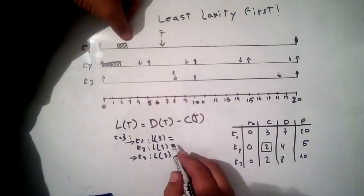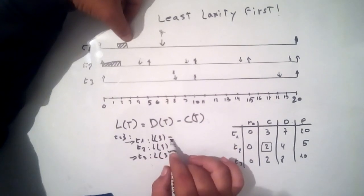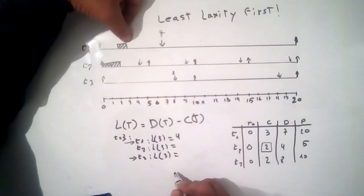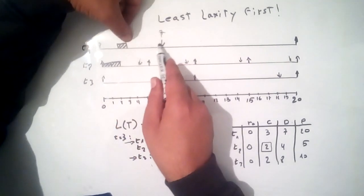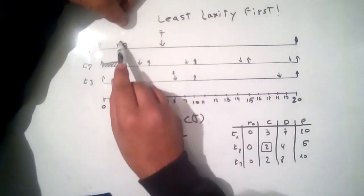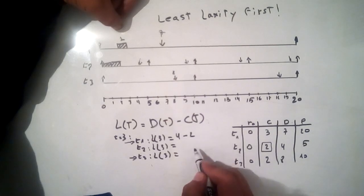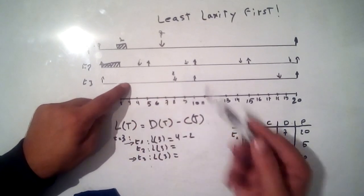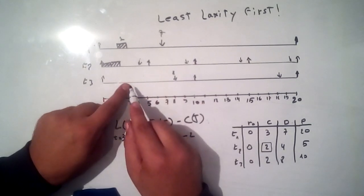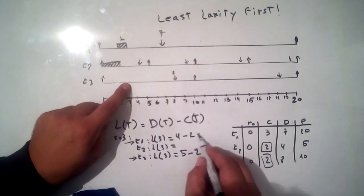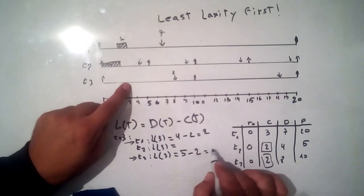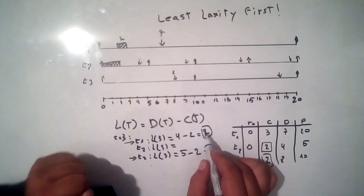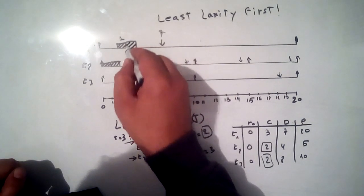At time T=3, laxity of T1: distance from 3 to deadline 7 is 4, remaining execution time is 2 (3 minus 1 executed), so laxity is 2. Laxity of T3: distance from 3 to deadline 8 is 5, remaining time is 2, so laxity is 3. T1 has the lowest laxity, so we execute T1 from 3 to 4.